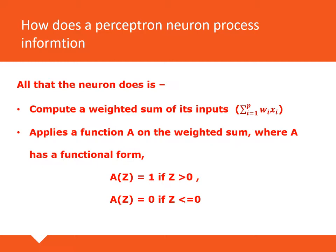If we represent the perceptron neuron using the concept of activation function, step one is calculating the weighted sum of the input features the neuron is receiving. Then if we apply a function — we are calling the function 'a' — on the weighted sum such that 'a' takes the value one if its argument is positive and takes the value zero if its argument is negative or zero, then this function 'a' applied on the weighted combination is actually doing the same task that the perceptron neuron was doing.